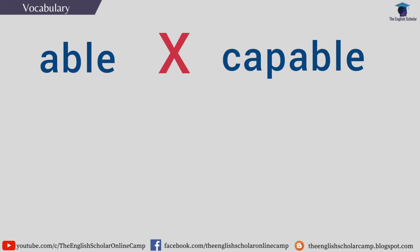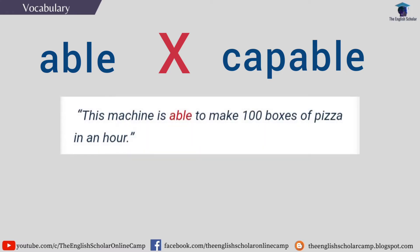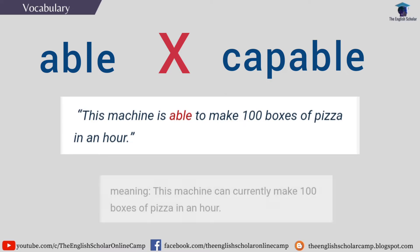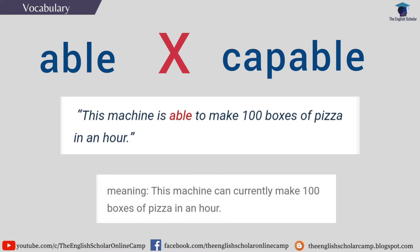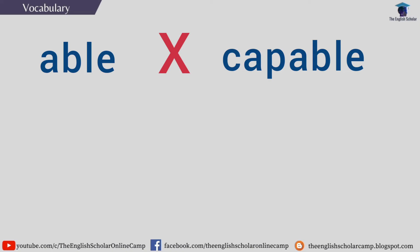Another example: This machine is able to make 100 boxes of pizza in an hour, meaning this machine can currently make 100 boxes of pizza in an hour.